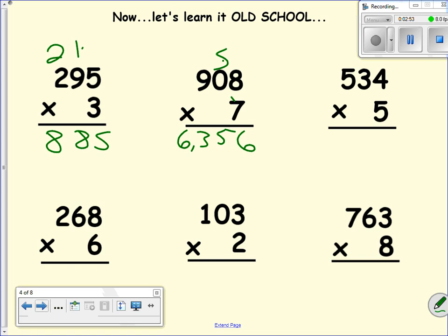Five hundred and thirty four times five. Four times five is 20. Then I have three times five, which is 15, plus two is 17. Five times five is 25, plus one is 26.